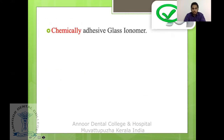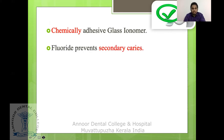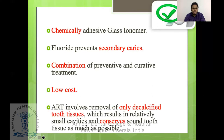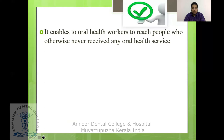Chemically adhesive glass ionomer cements are used, so we don't need to follow complex cavity preparation techniques. Fluoride released from the glass ionomer prevents secondary caries. It is a combination of preventive and curative treatment, low cost, and a minimally invasive procedure. ART involves removal of only decalcified tooth tissues, resulting in a relatively small cavity and conserving sound tooth structure as much as possible.